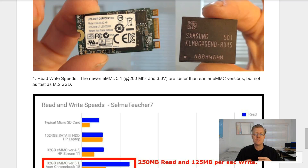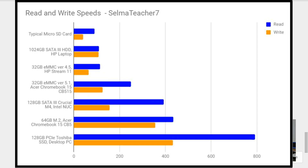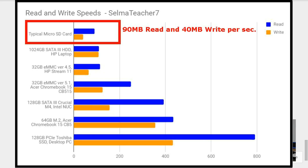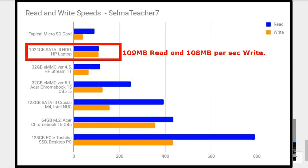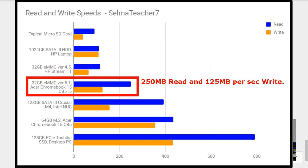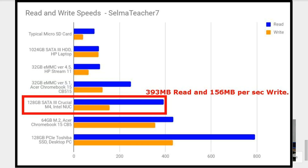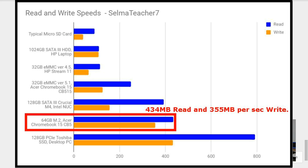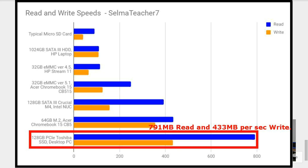Next is read/write speeds. The newer eMMC 5.1 running at 200 megahertz at 3.6 volts is faster than earlier eMMC versions but not as fast as M.2 SSDs. Looking at the benchmark charts, we compare: a typical microSD card, a 1TB SATA 3 hard disk drive in an HP laptop, a 32GB eMMC version 4.5 from the HP Stream 11, a 32GB eMMC version 5.1 from the Acer Chromebook 15 CB515, a 128GB SATA 3 Crucial M4 from an Intel NUC, a 64GB M.2 from the Acer Chromebook 15 CB5, and a 128GB PCI Express Toshiba SSD from a typical desktop PC.